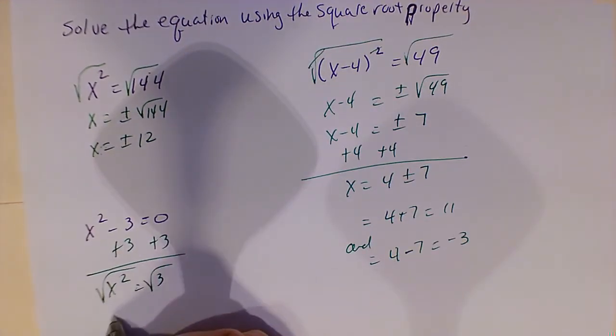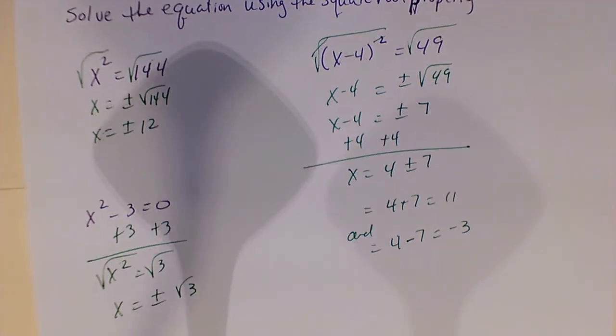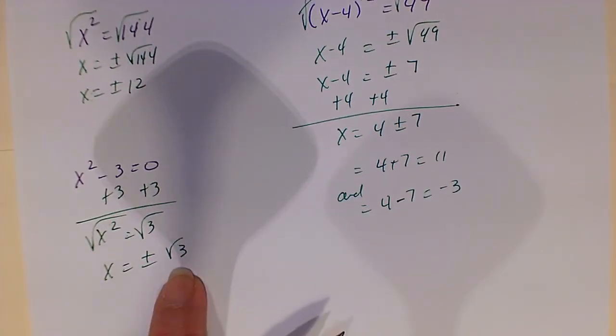Taking the square root of both sides, I get x equals plus or minus the square root of 3. There's nothing more I can do here because square root of 3 will not reduce. And so you're done.